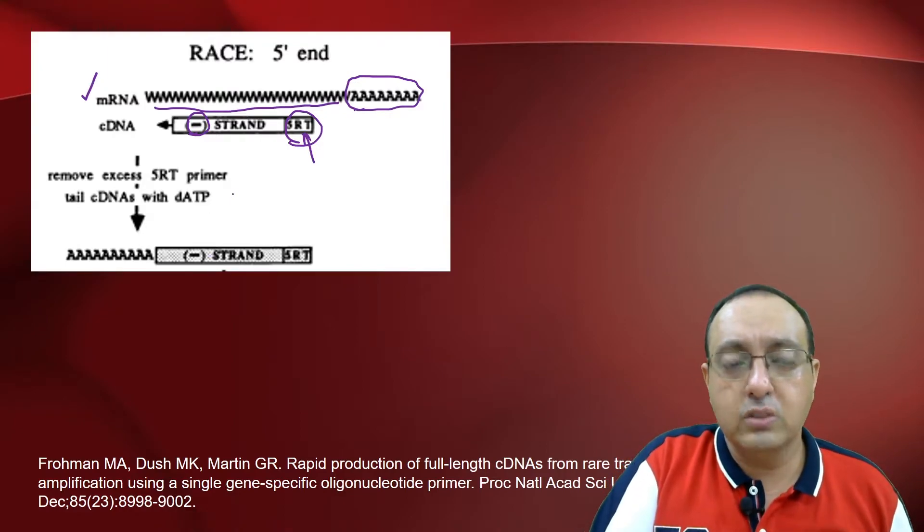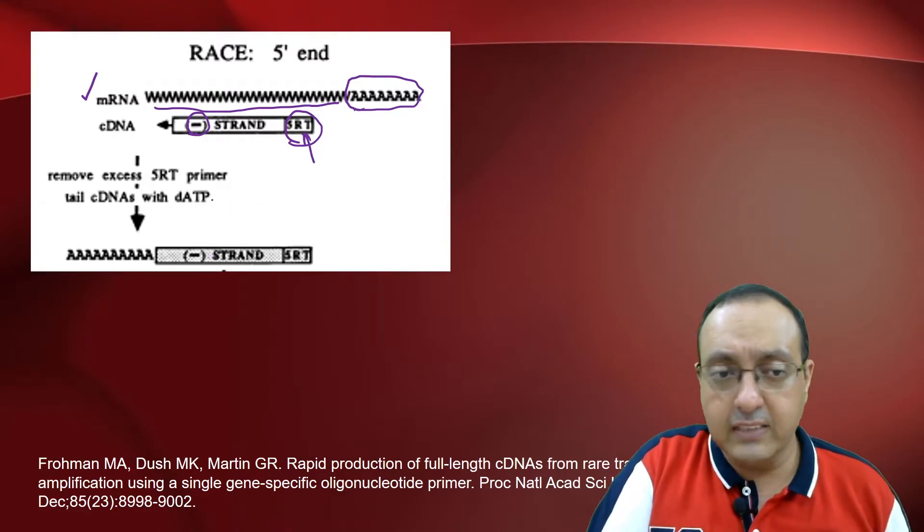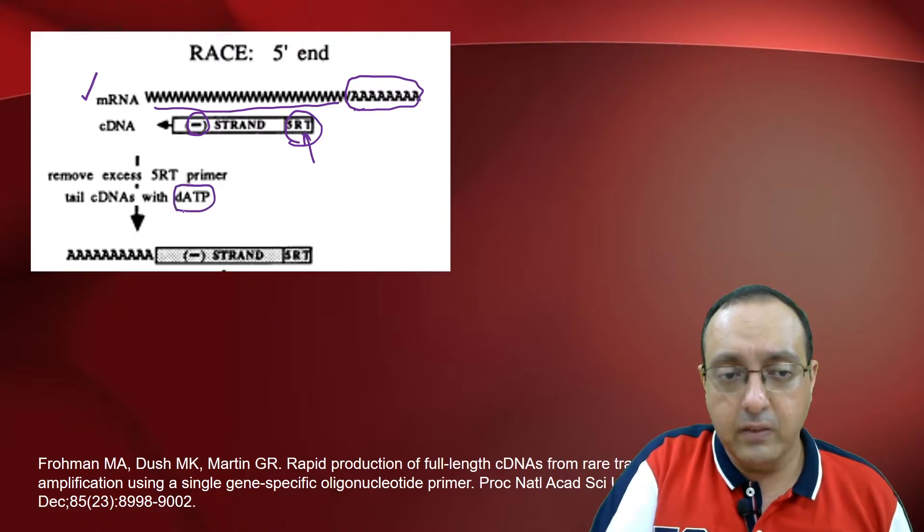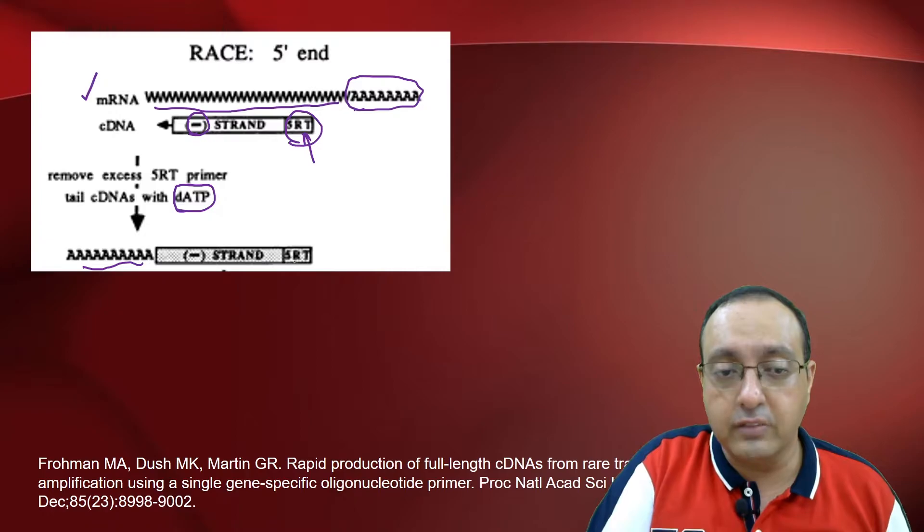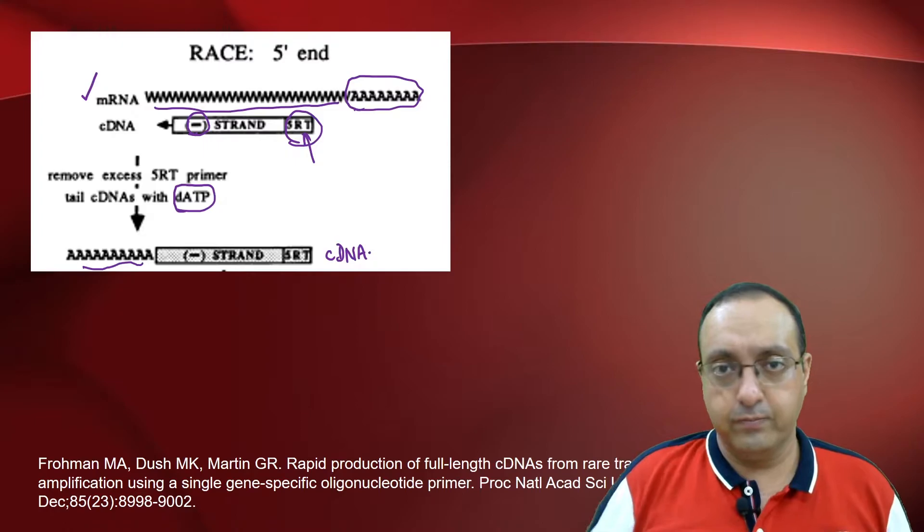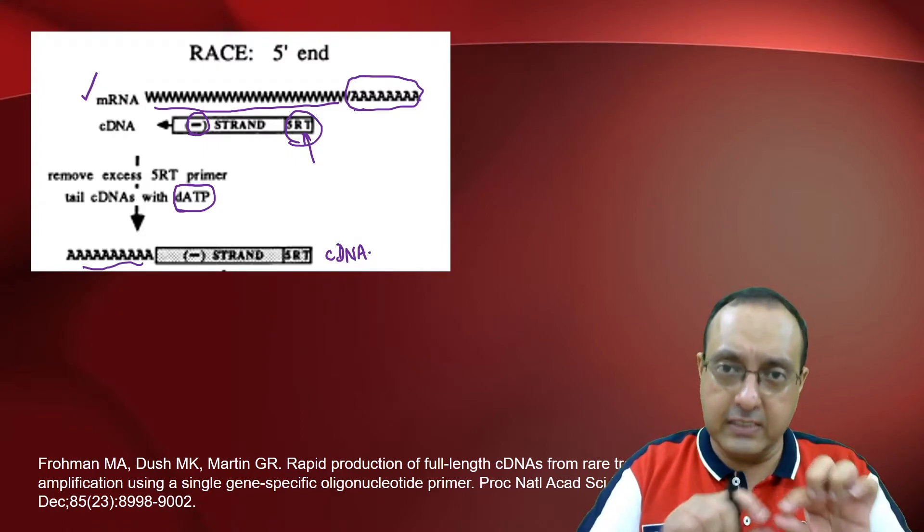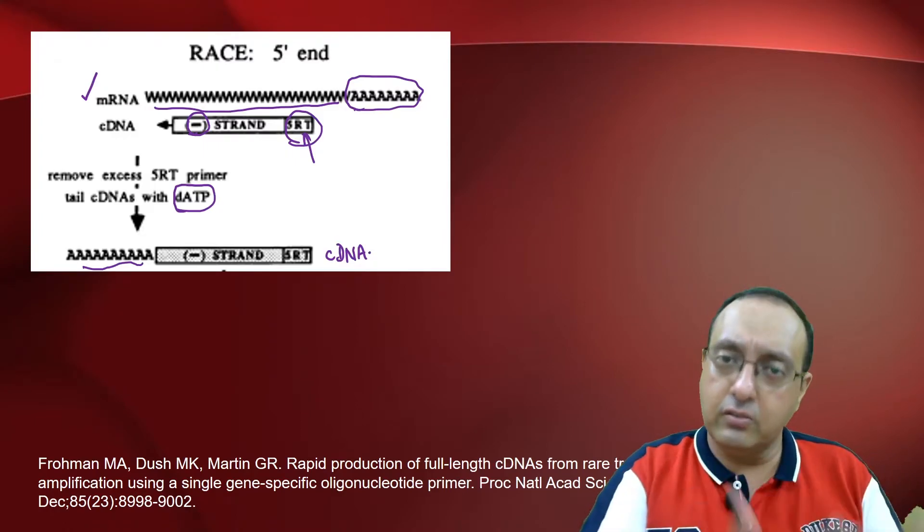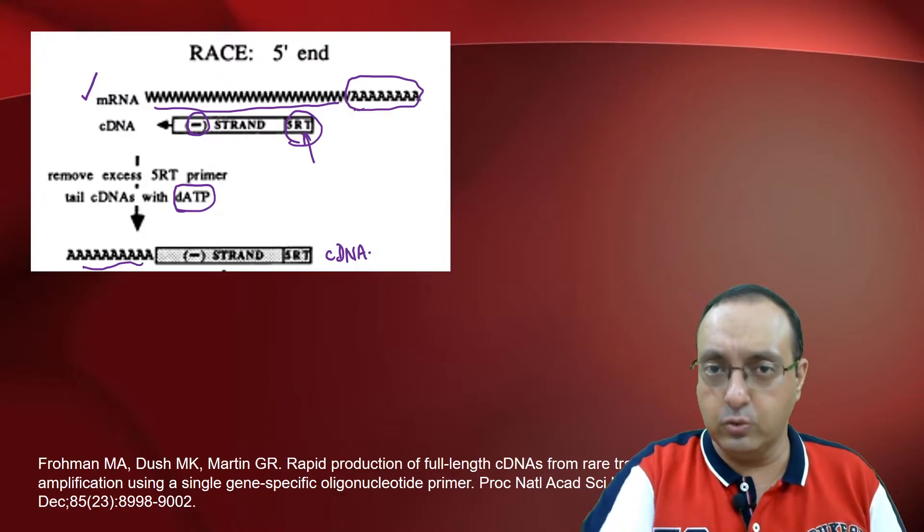And now you will use terminal transferase along with dATP to label the 3' end of the negative strand of the cDNA that you have just made with A residues. So now you have a single-stranded cDNA with 3' A residues, poly-A.